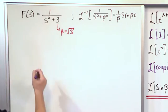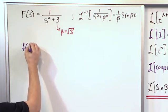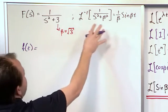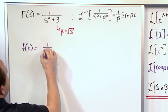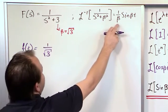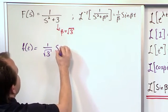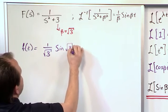So knowing that then, we can just write the answer down directly. And we can say, well, if this is true, then 1 over square root of 3, meaning 1 over beta here, times the sine of square root of 3 times t.